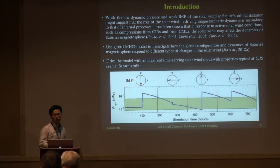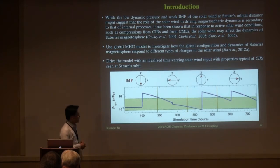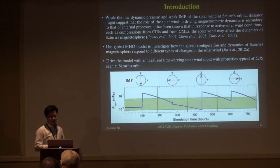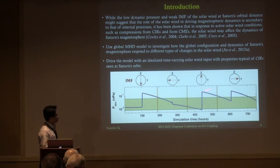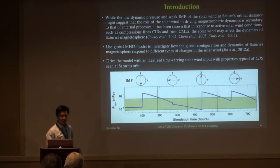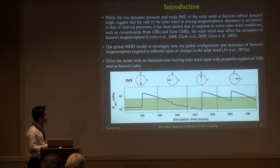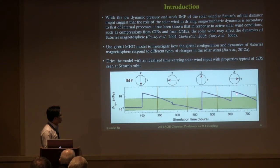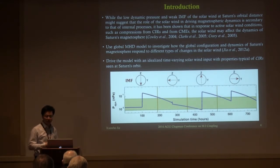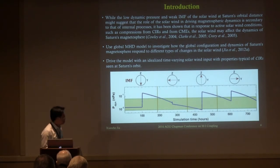The CIR typically spends about a week at Saturn's orbit, so we designed a simulation running for about 750 hours and created an idealized input to mimic the CIR features seen at Saturn's orbit. We divided the 750 hours into four intervals with the IMF set in different orientations — southward, northward, dawnward, and duskward — among which the spiral field is probably most realistic for Saturn's magnetosphere. We also introduced forward and reverse shocks arising from the stream interactions. This was a very computationally expensive simulation — it took about two months continuous time on a NASA supercomputer.